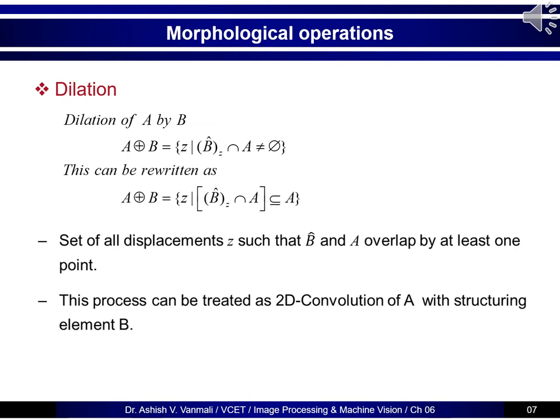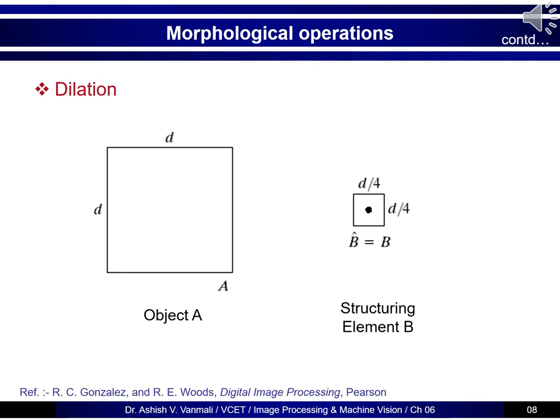We can also write dilation as all Z such that B-cap_Z intersection A belongs to A (at least one element). This is the set of all displacements Z such that the reflected structuring element B-cap and A overlap by at least one pixel. This operation is identical to 2D convolution of A with structuring element B. Let's understand this with an example: consider object A of size D×D, a white patch in the image. Henceforth in morphological image processing we process binary images, so the object has values 1 inside and 0 outside.